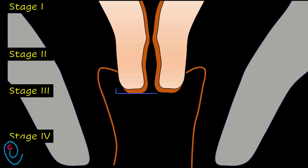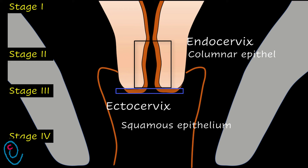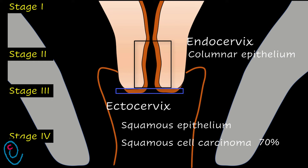The cervix is formed of two parts: ectocervix and endocervix. The ectocervix is lined by squamous epithelium, while the endocervix is lined by columnar epithelium. Most cervical tumors arise from squamous epithelium. Squamous cell carcinoma forms about 70% of all cervical cancers.